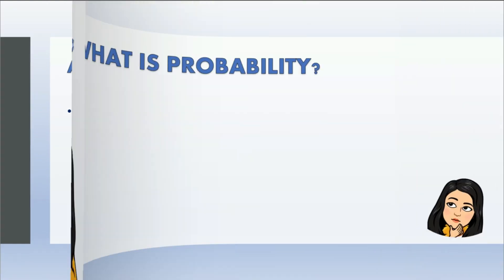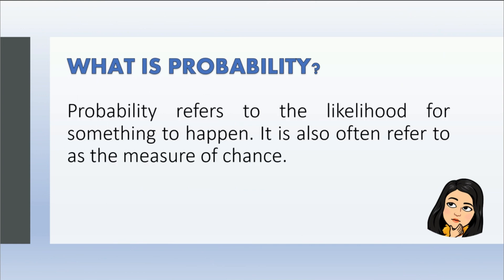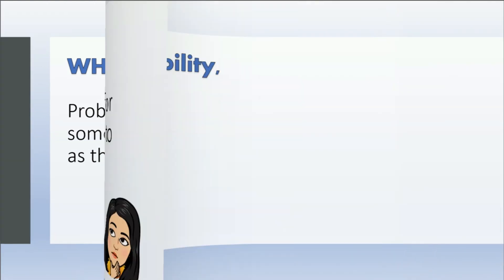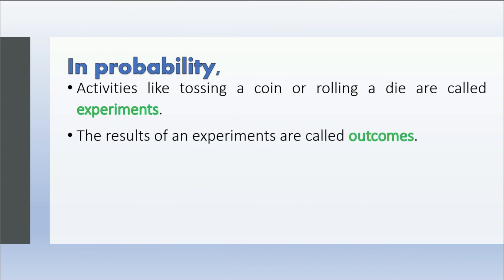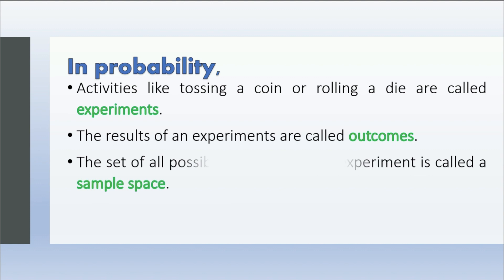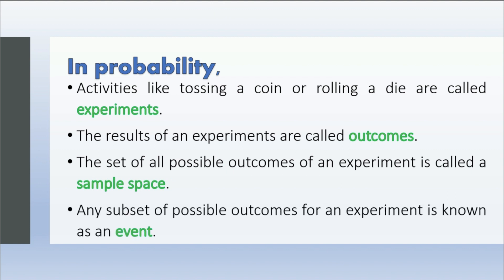But what is probability? Probability refers to the likelihood for something to happen. It is also often referred to as the measure of chance. Probability enables us to predict the occurrence of an event as a result of an experiment. In probability, activities like tossing a coin or rolling a die are called experiments. These are activities with observable results. And the results of an experiment are called outcomes. While the set of all possible outcomes of an experiment is called a sample space. Lastly, any subset of possible outcomes for an experiment is known as an event.